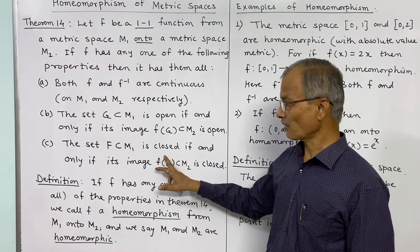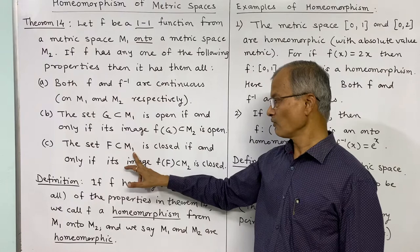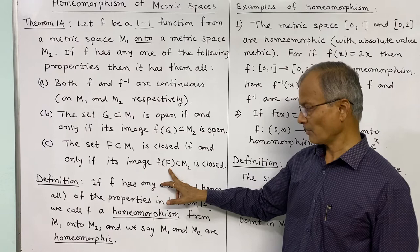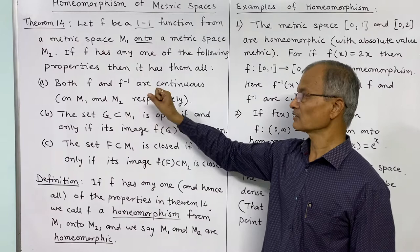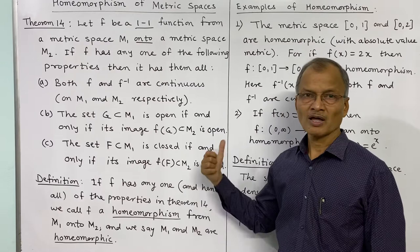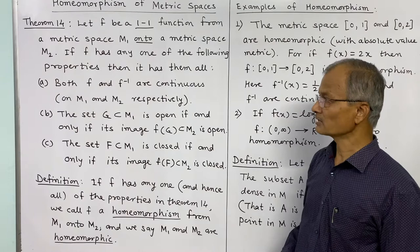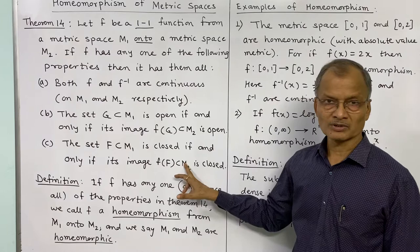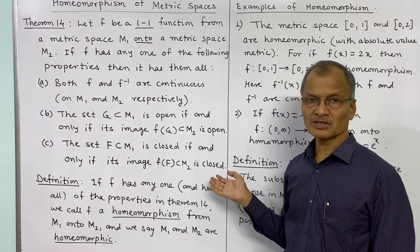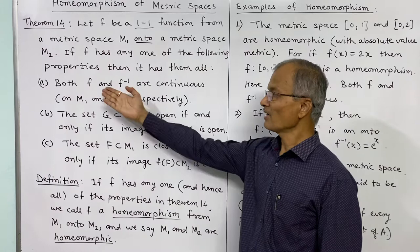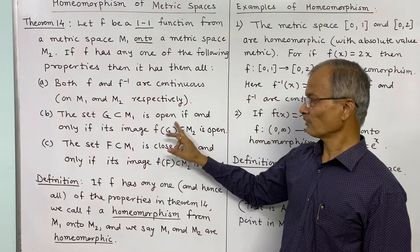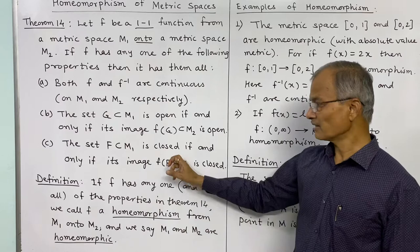The third property is the same statement about closed sets: a set F in M1 is closed if and only if its image f(F) in M2 is closed. So if f and f-inverse are continuous, it sends closed sets to closed sets and vice versa. These three statements are equivalent — if one holds, the others hold.